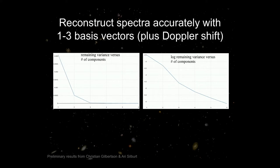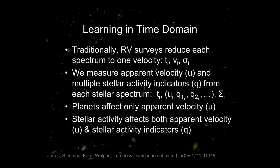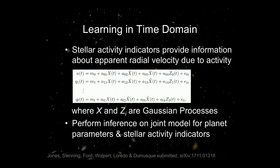Once we've done that — taken each spectrum with possibly millions of flux measurements and turned them into just a few values — we have the time the data was taken, the apparent radial velocity shift, one to three indicators of stellar activity from these machine learning algorithms, and a covariance matrix about the correlations between those measurements. A planet can affect the apparent radial velocity shift but nothing else. Stellar activity can affect everything we've measured. With that, we can set up a Bayesian inference model where the true velocity has some model — say the orbit of the planet — plus whatever perturbation to the apparent velocity is due to stellar activity, and the same Gaussian process also causes changes in the stellar activity indicators.